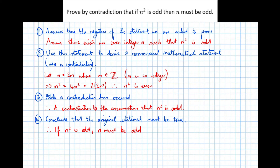We then derived a nonsensical statement from this assumption. We let n equal 2m, assumed that if n was even then n squared could be odd, and proved that n squared had to be even also — which contradicts the assumption. Therefore it can't be true, so the opposite must be true, i.e. the original statement we were asked to prove must be true. The essence of proof by contradiction: assume the opposite is true, show it leads to a nonsensical statement, therefore what you were originally asked to prove must be true.